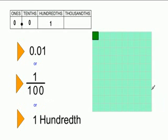If you split that into a hundred pieces, and you only color 1, then you would write the 1 in the hundredths place, and you would have to have this 0 as a placeholder. So you could write it .01, or 1 over 100, or 1 hundredth.